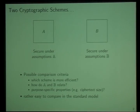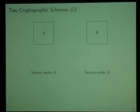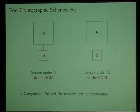There are also purpose-specific properties, such as the ciphertext size for an encryption scheme. This is rather easy to assess in the standard model. Now, if we consider the very same situation but these proofs come in the random oracle model — scheme A proven secure under A, and scheme B proven secure under B in the random oracle model — it is now much less clear which one of the schemes is better. The comparison is biased by this random oracle dependency.